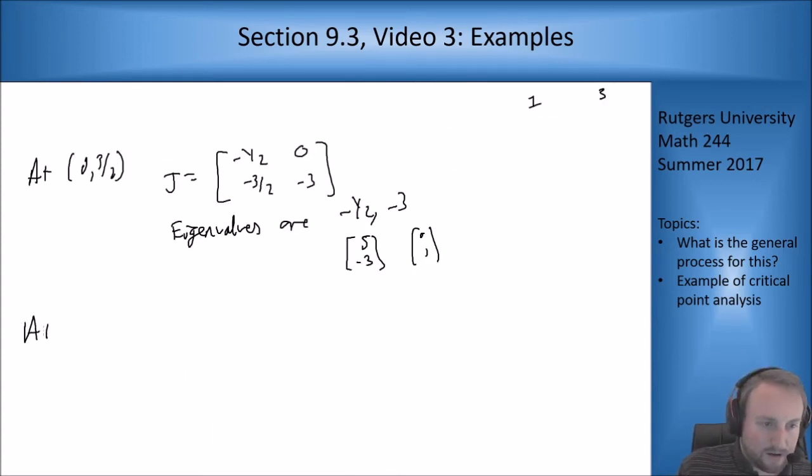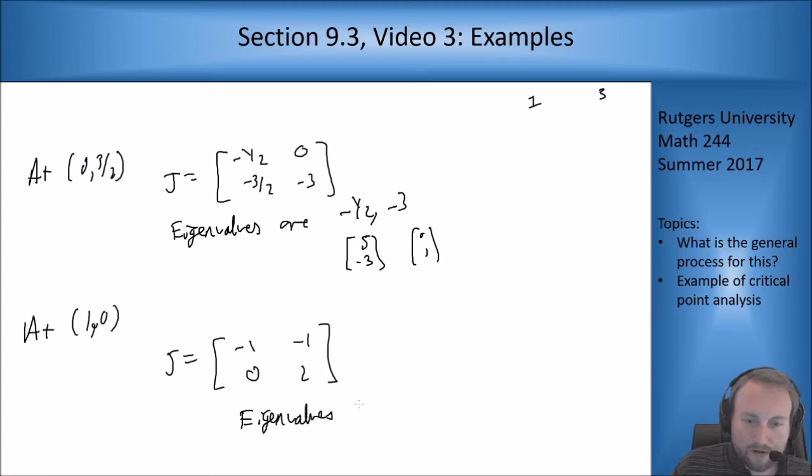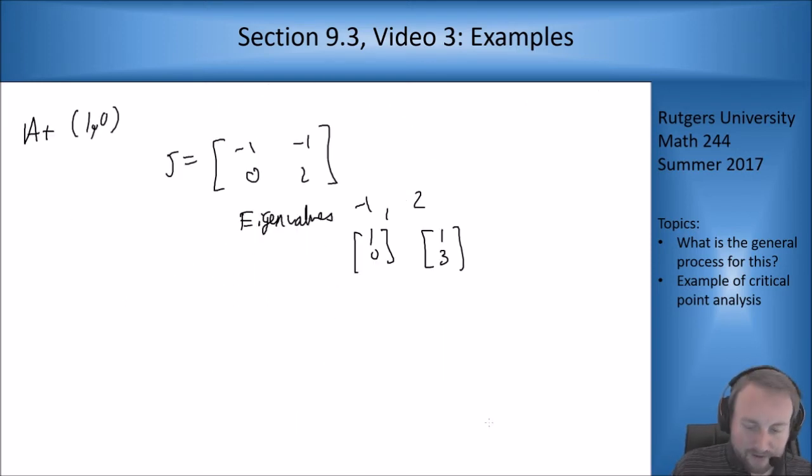At (1,0), J is [-1, -1; 0, 2], which has eigenvalues -1 and 2 with corresponding eigenvectors (1,0) for -1 and (1,3) for 2. This is a saddle.